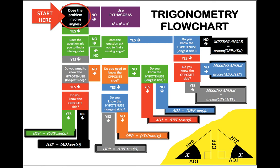So if you remember my trigonometry flowchart: does the problem involve angles? Yes, it does. We're trying to figure out the angle of the gradient. Does the question ask you to find a missing side? No, it doesn't, because we're trying to figure out the angle. Does the question ask you to find a missing angle? Yes, it does. Do you know the hypotenuse? Yes, we do. Do you know the opposite side? Yes, we do.